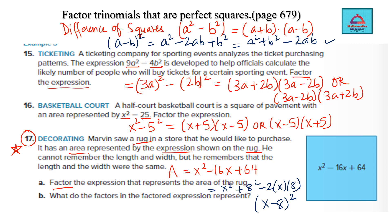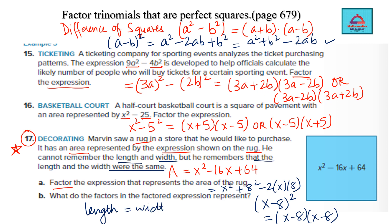This means (x − 8)² = (x − 8)(x − 8). The rug is shaped like a square, as stated — length equals width. The factors represent that both the length and the width equal (x − 8), confirming the rug is square-shaped.